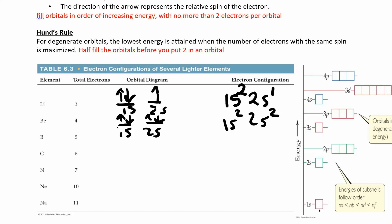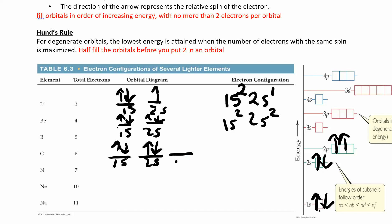Boron would be similar, but now you start putting electrons in the p orbitals. Let's skip to carbon, which has six electrons. Placing them: two in 1s, two in 2s, and two in 2p — one in each of the first two p orbitals following Hund's rule. The orbital diagram shows 1s, 2s, and 2p, and the electron configuration is 1s² 2s² 2p².